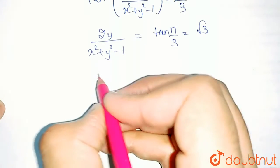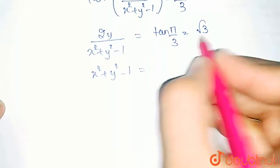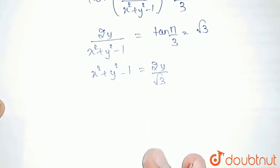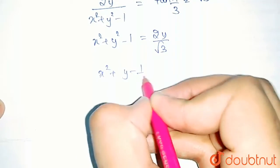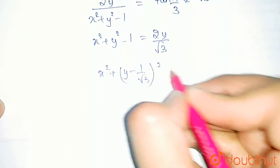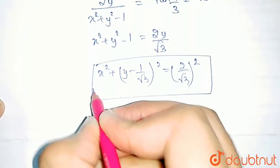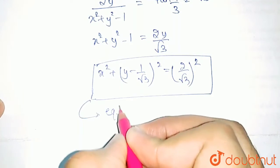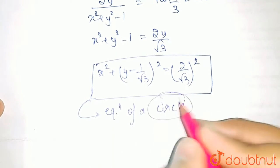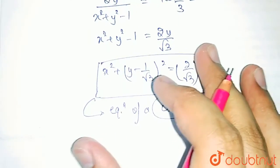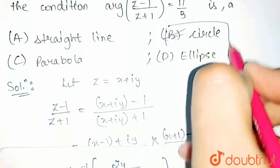On cross multiplication we get x squared plus y squared minus 1 equals 2y by root 3. Making this a perfect square, we get x squared plus (y minus 1 by root 3) whole square equals (2 by root 3) squared. This is the locus of z — we know this is the equation of a circle. So the locus of z is a circle, hence the correct option is option B.